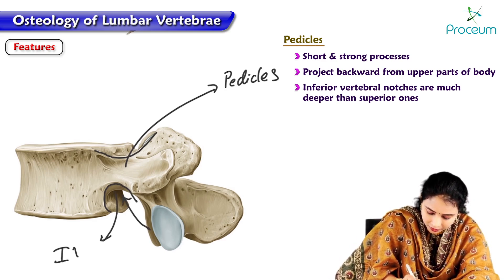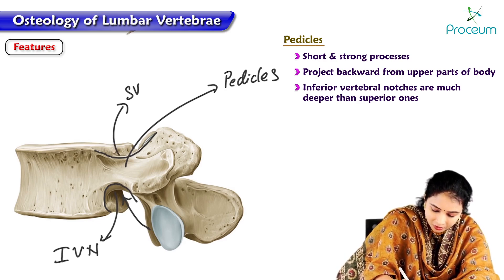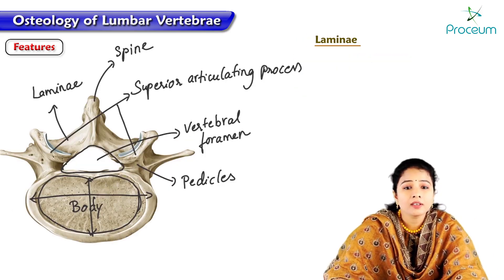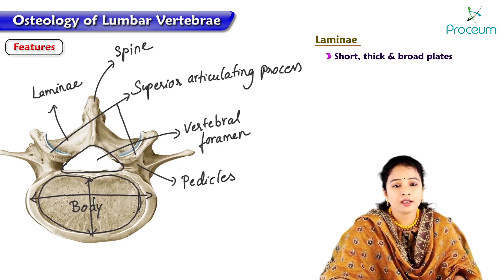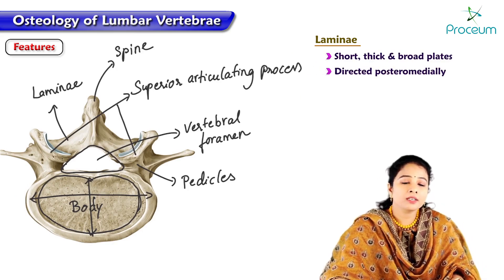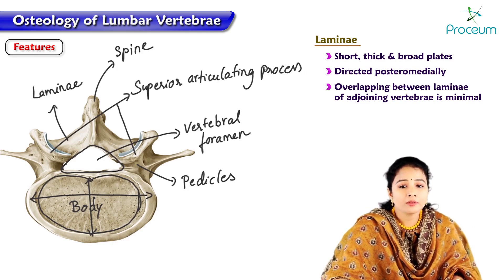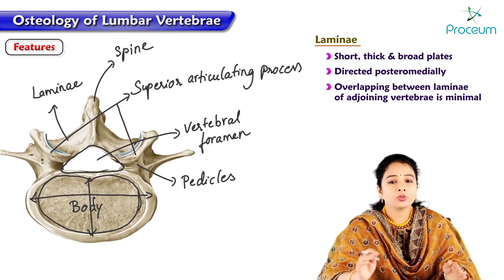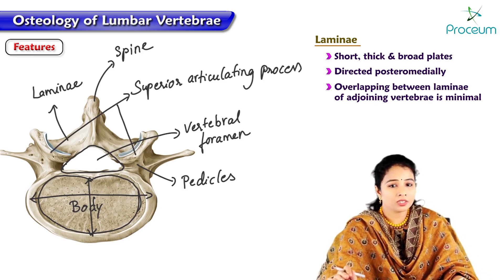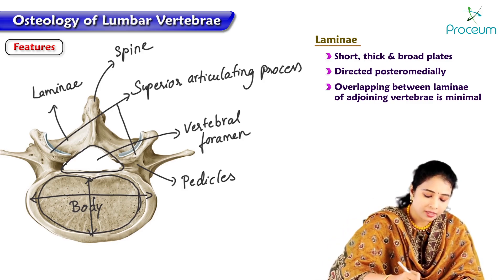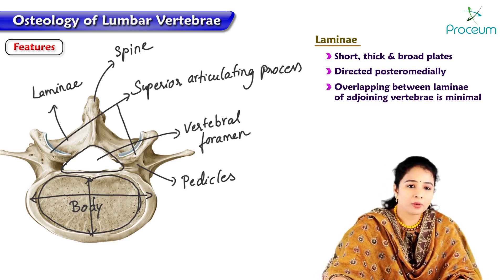The inferior vertebral notch is quite deep compared to the superior vertebral notch. The laminae are short, thick, and broad plates directed posteromedially, and the overlapping between the laminae of adjoining vertebrae is minimal. The laminae in the lumbar region don't overlap much; they are thick and broad plates that converge to form the spine.